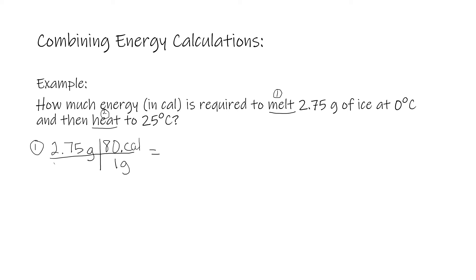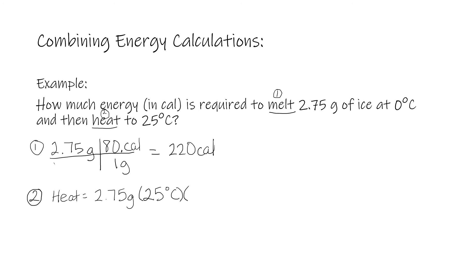The first equation calculates the energy required to melt the ice. Going between solid and liquid, we use heat of fusion as a conversion factor: 2.75 grams times 80 calories per gram gives 220 calories. We are still at 0°C because temperature doesn't change during a state change. The second equation uses the heat equation to heat the now-liquid water: heat equals 2.75 grams times a temperature change of 25°C (from 0 to 25) times specific heat of 1 calorie per gram per degree Celsius, giving 68.75 calories.